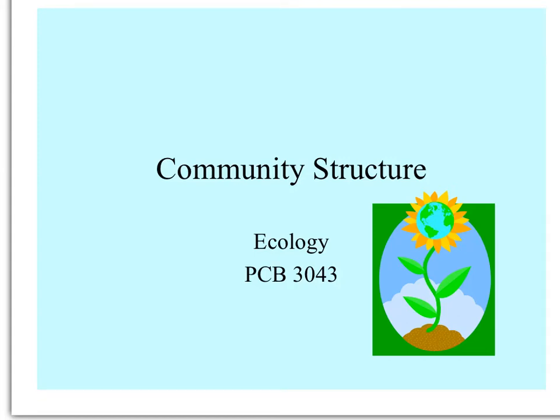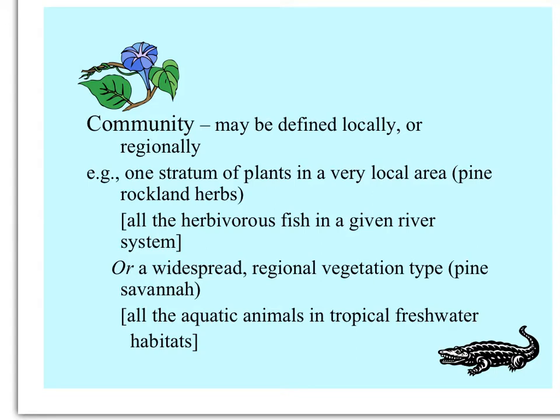This lecture is about community structure. We can define a community locally or regionally. A local example would be one stratum, like a life form group of plants in a very local area — for example, herbaceous plants of the pine rocklands, or all of the herbivorous fish in a given river system.